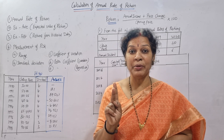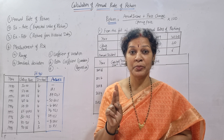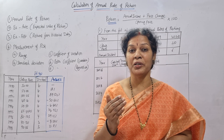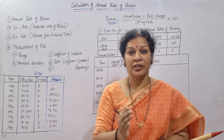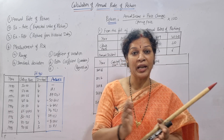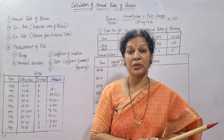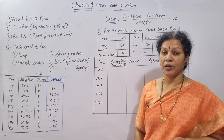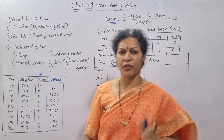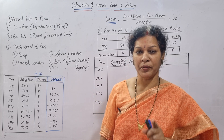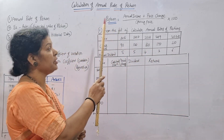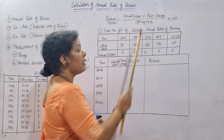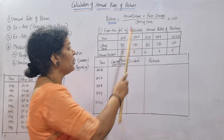Another form of return is capital appreciation. If I invest 1 lakh and after 2 years it becomes 1 lakh 20 thousand, that is capital appreciation — different from dividend or interest. So there are two ways you can expect return. Now, the formula for annual rate of return is: Annual Rate of Return = (Annual Income + Price Change) / Opening Price × 100.